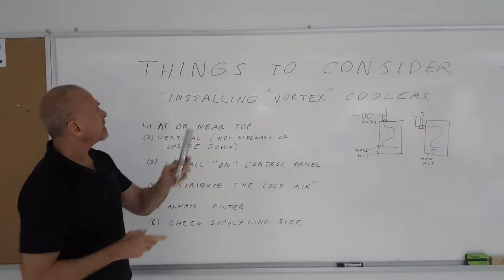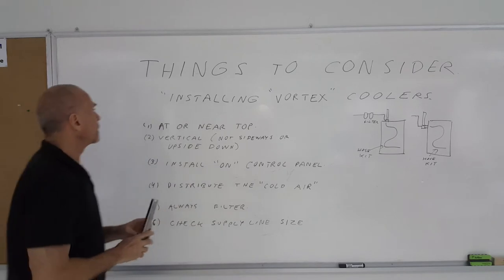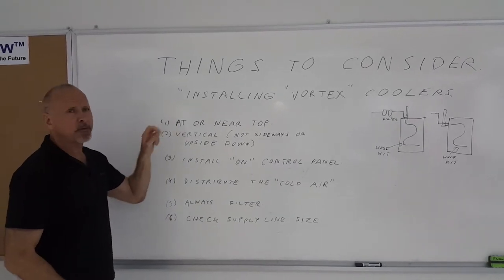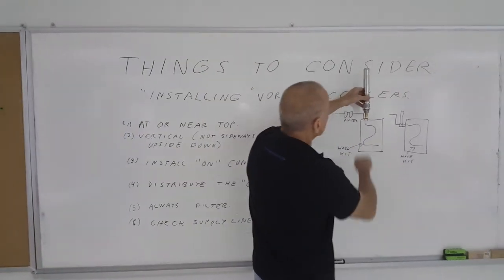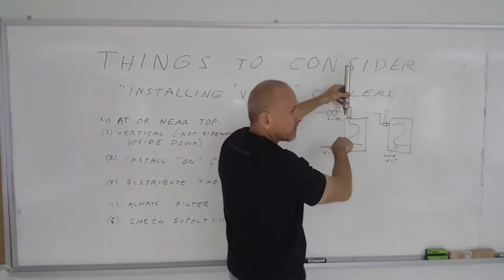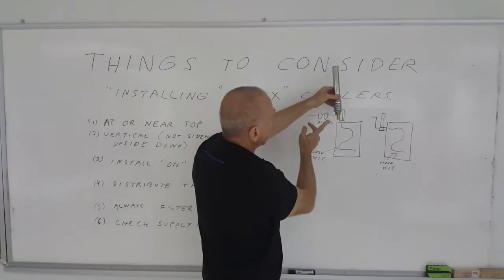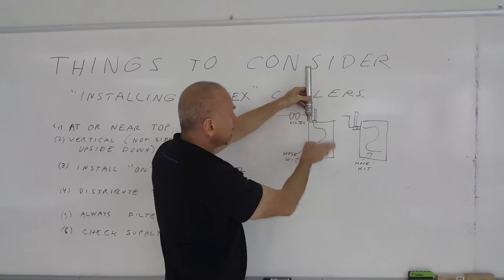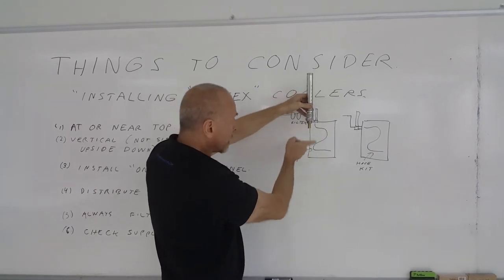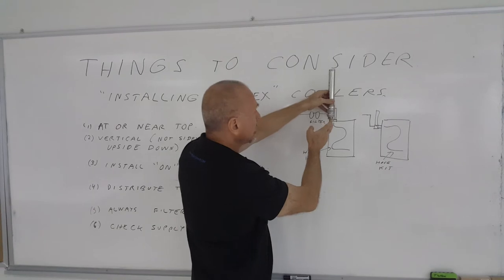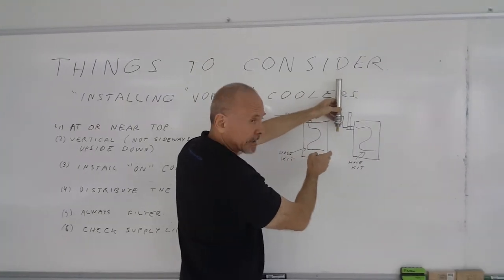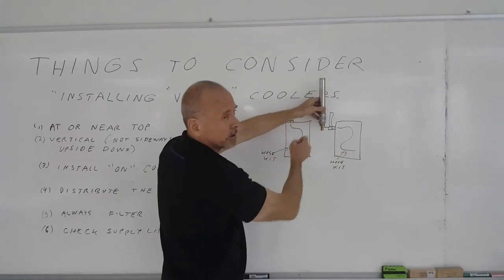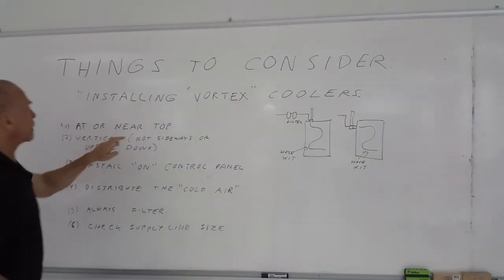Things to consider when installing these vortex style coolers. Number one, you want to have it at or near the top of the panel. The reason is hot air rises, cold air falls. Panel coolers have a vent that's built in to allow the hot air that's being displaced to leave the panel. So you would want to have it at the top, or if it can't be mounted at the top, utilizing a side mount, it can be mounted near the top on the side, still allowing for the hot air to come out.